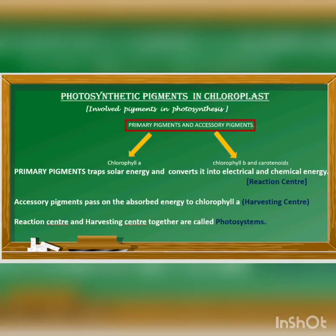Next is about the pigments involved in the photosynthesis process. The main pigments are chlorophyll a, chlorophyll b, and carotenoids. The pigments involved in photosynthesis are called photosynthetic pigments.